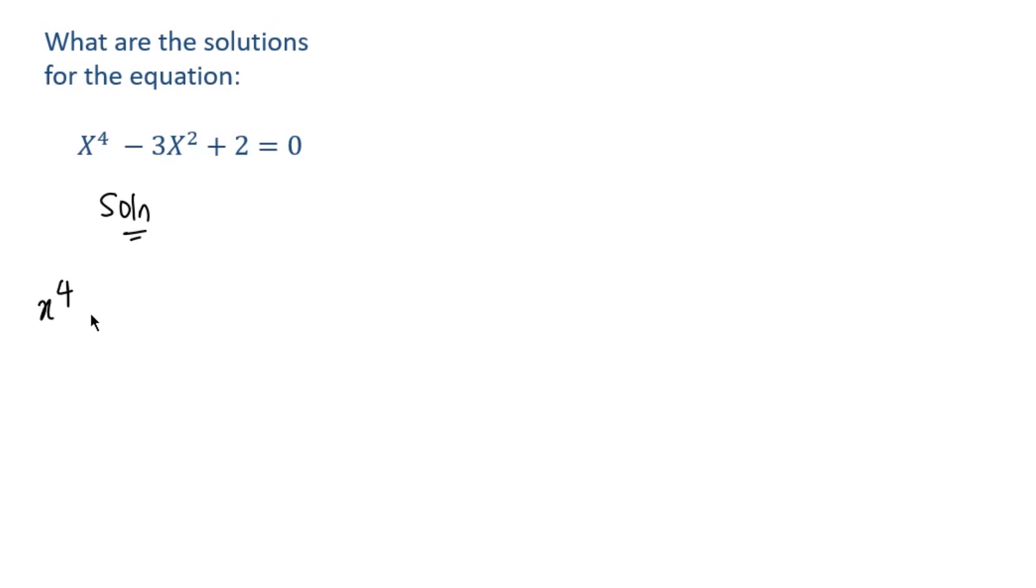We have x to the power of 4 minus 3x squared plus 2 equals 0. So let's denote y, or any constant, to equal x squared.